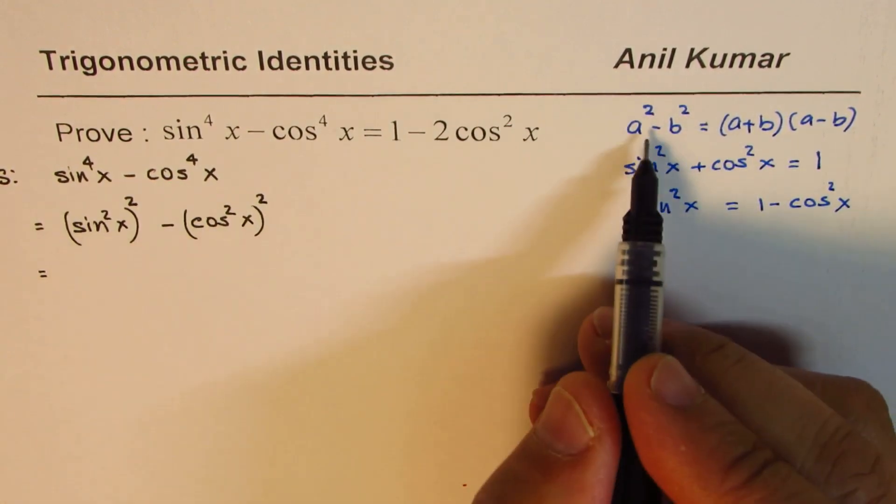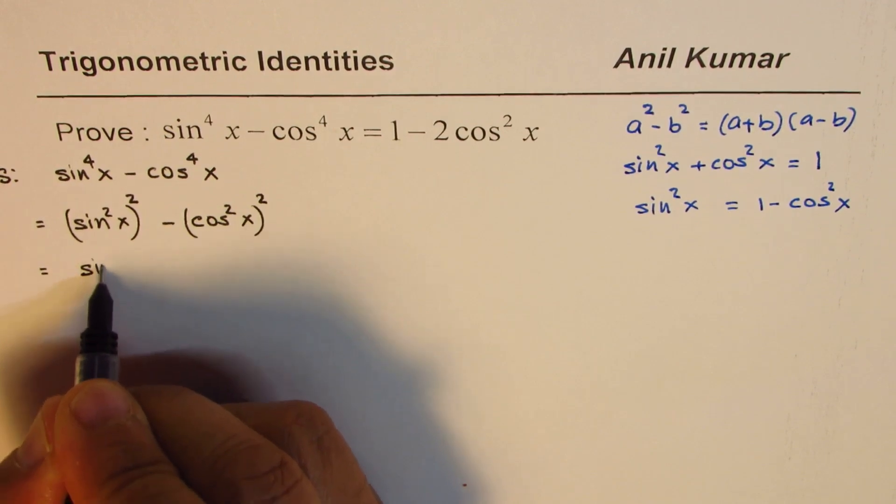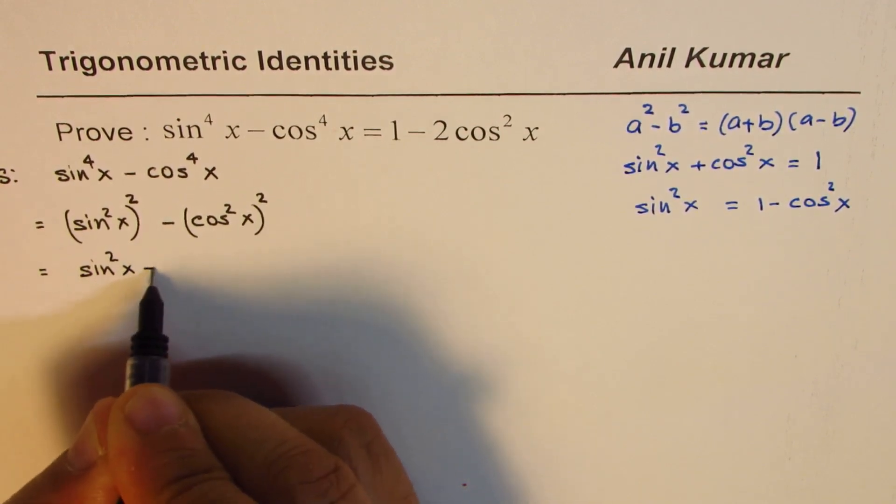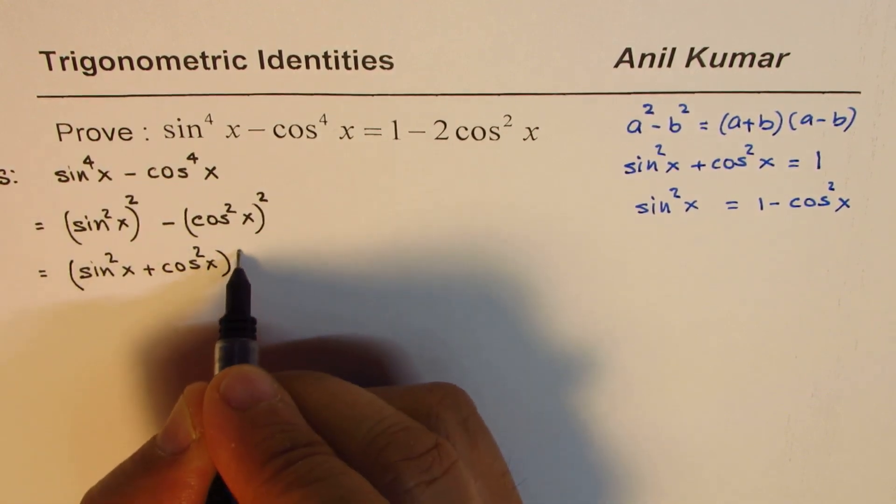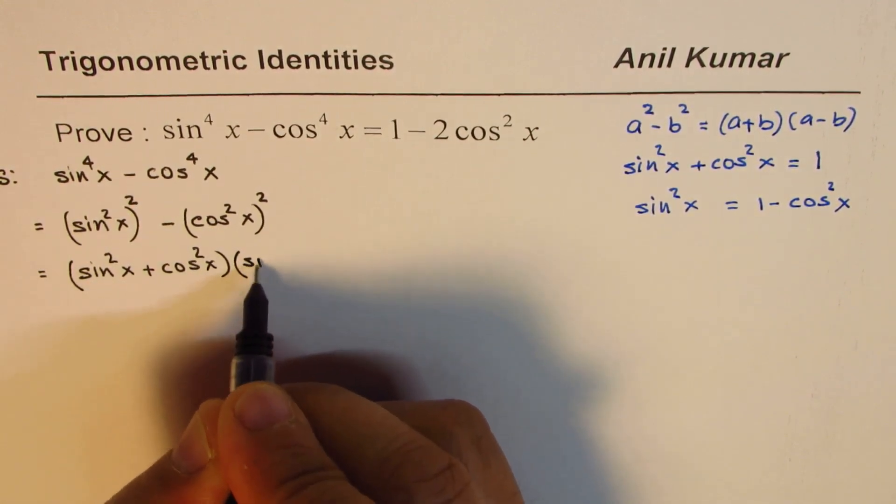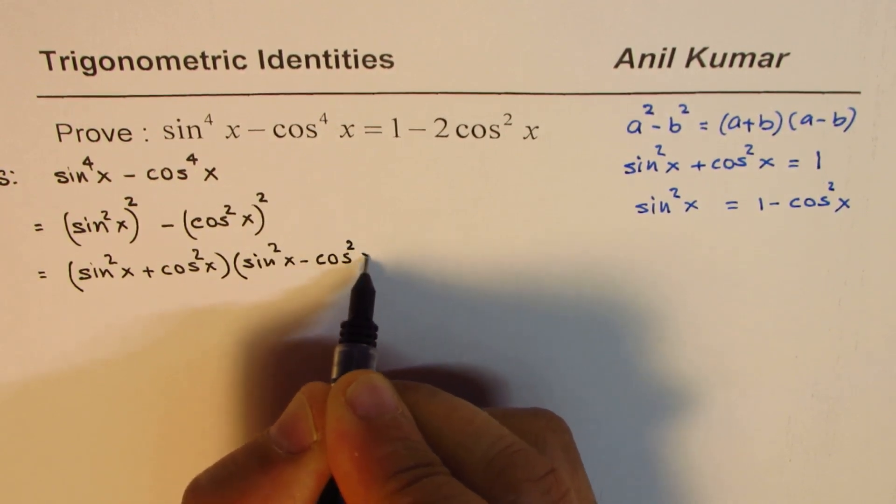Now we can apply the difference of squares formula to factor. So what we get here is (sin²x + cos²x) times the difference, (sin²x - cos²x). Correct?